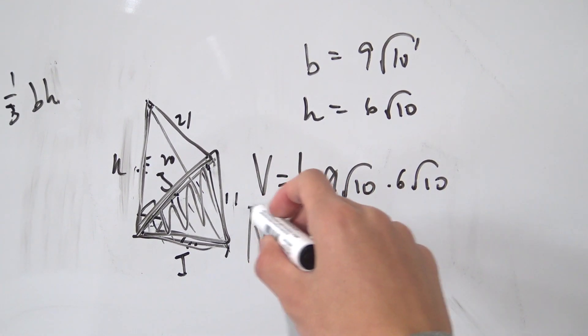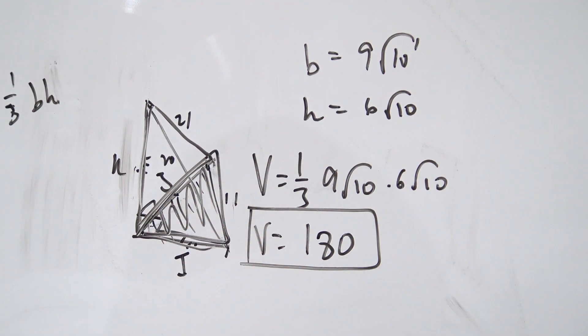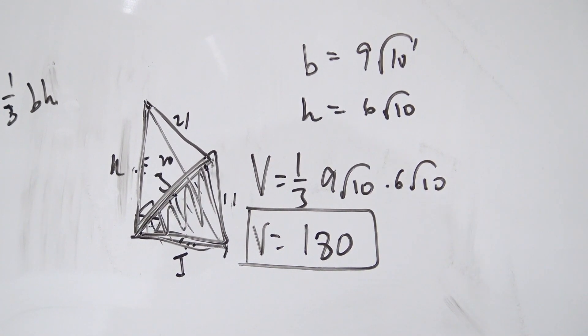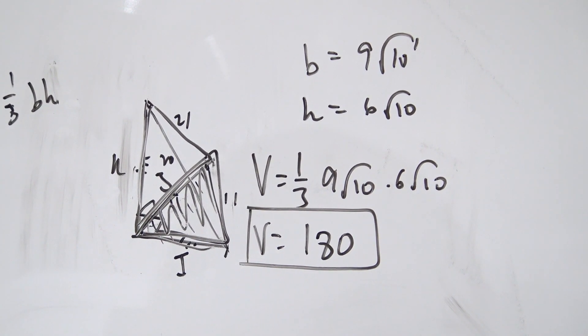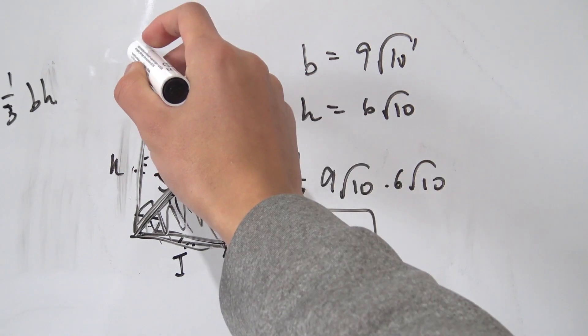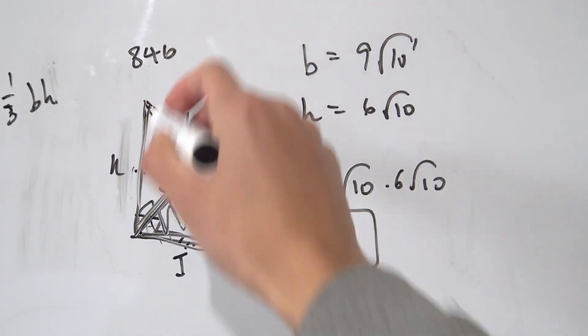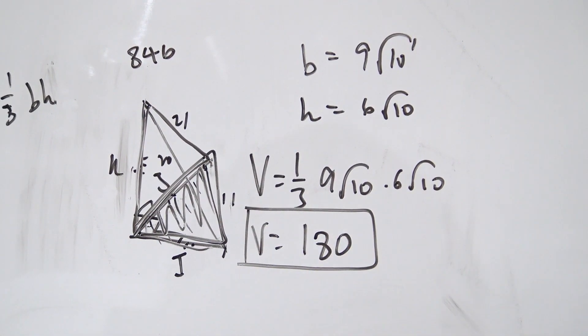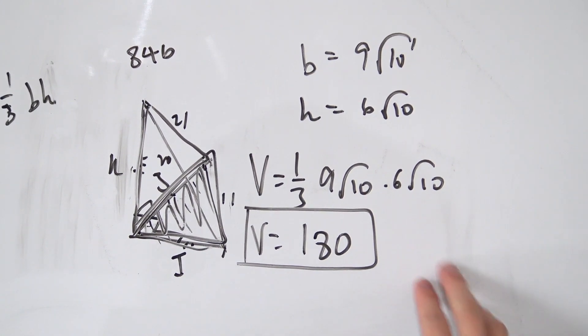So we have our total volume of our weird triangle shape right here being equal to 180. So yeah, that's my solution to this problem right here, even though I didn't do it on the actual exam. I think on the exam, I guessed like 846 or something, which was quite a bit off from 180. But yeah, there you go.